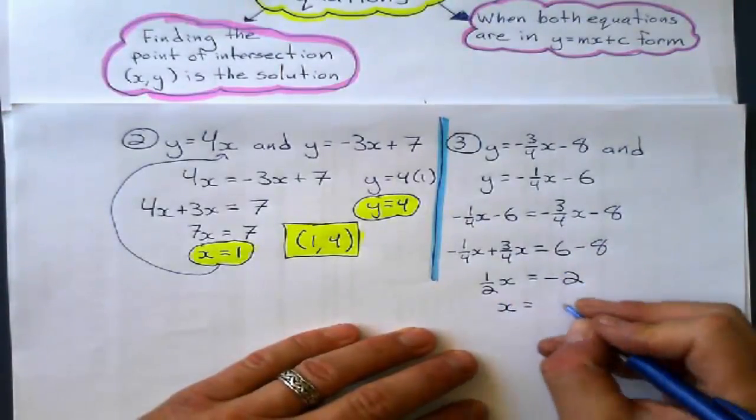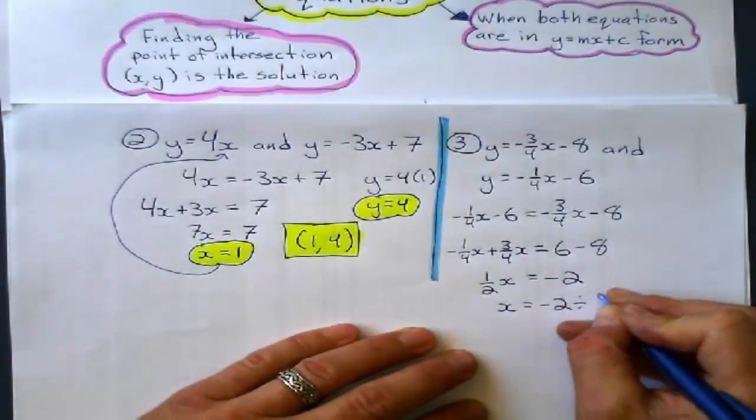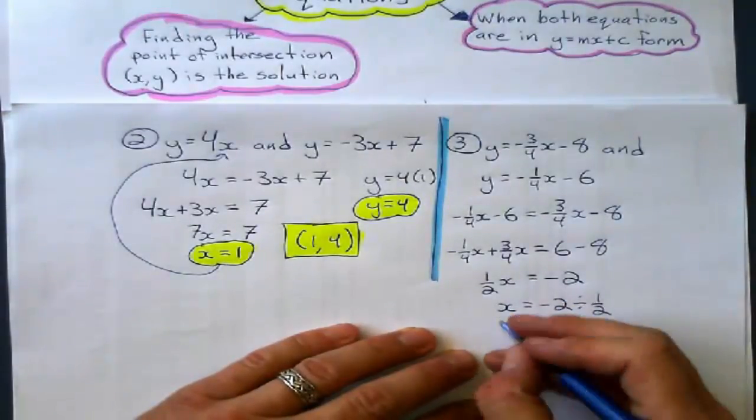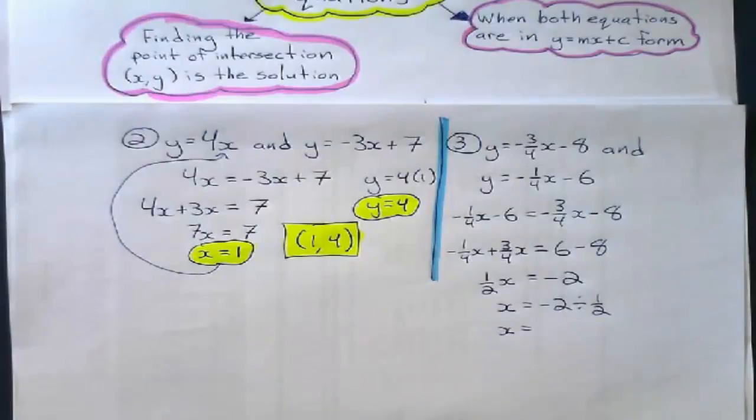So, to solve for x, I'm going to say negative 2 divided by that 1 half, and that gives me negative 4.